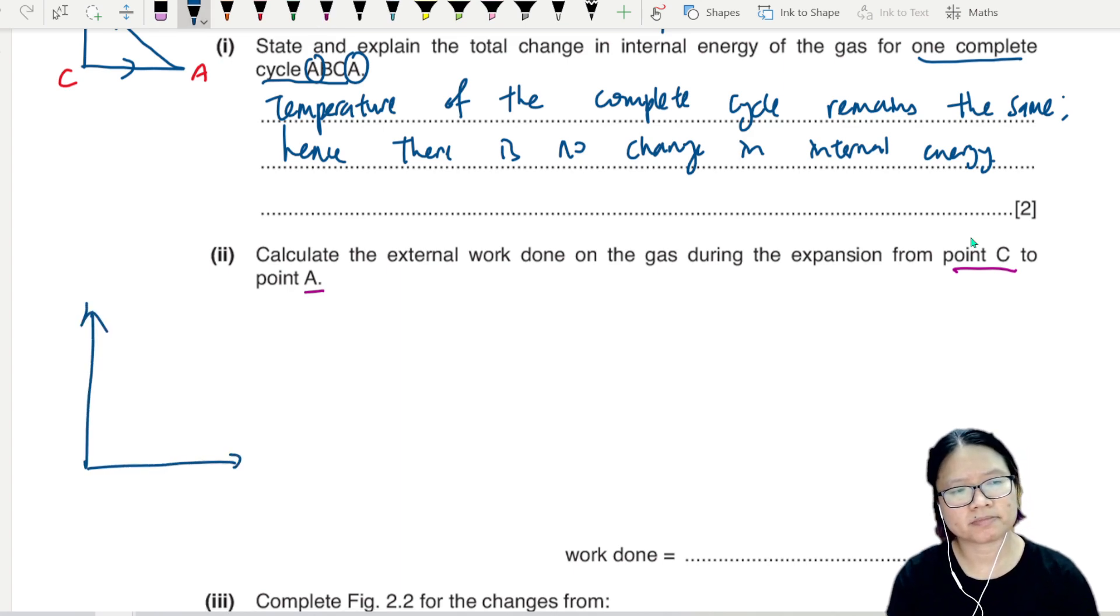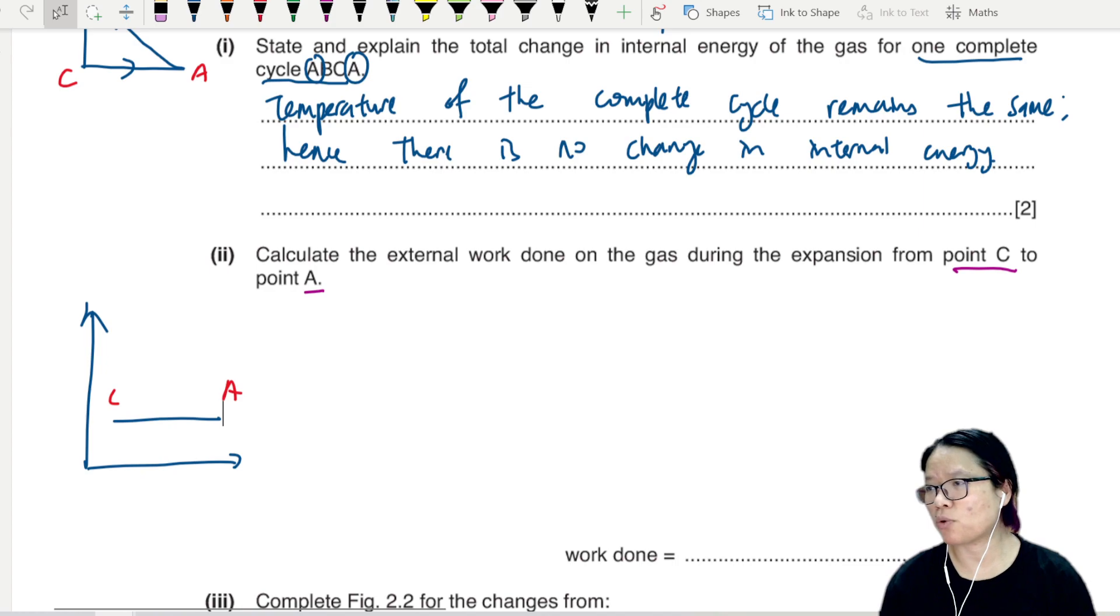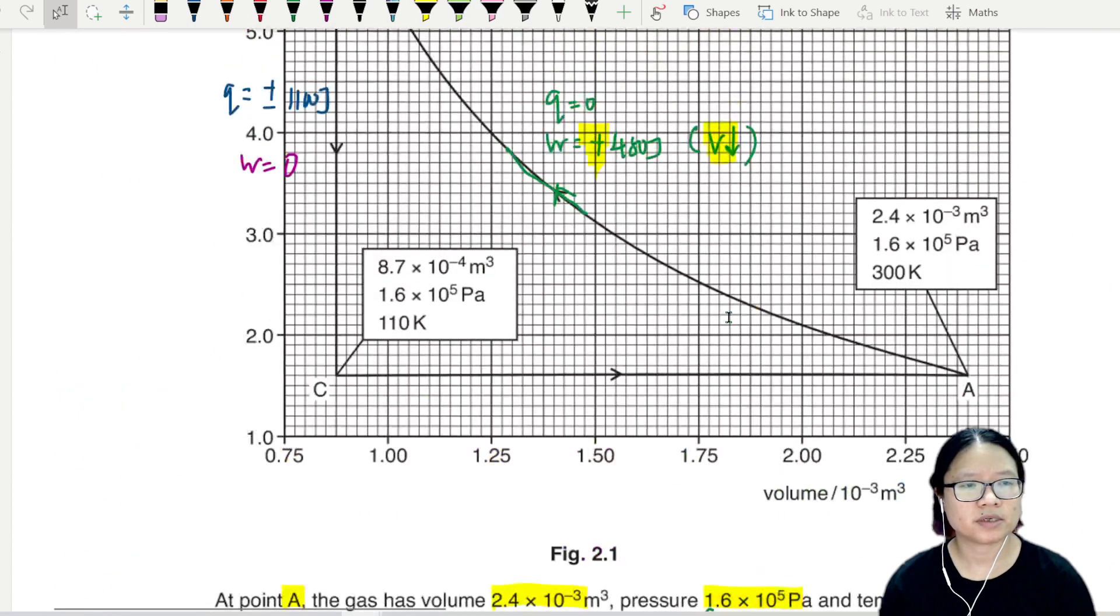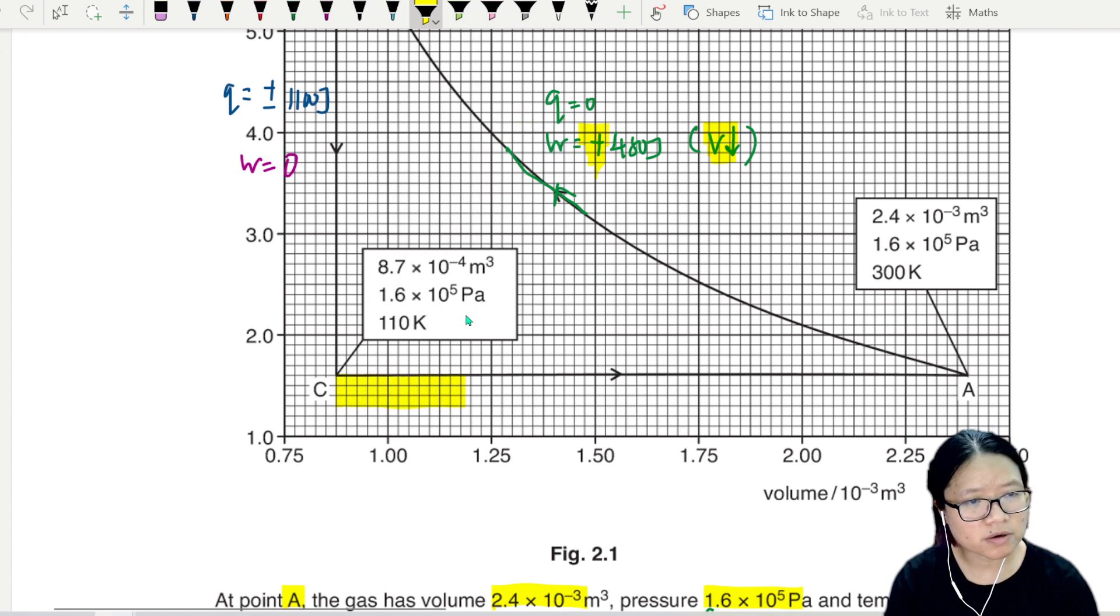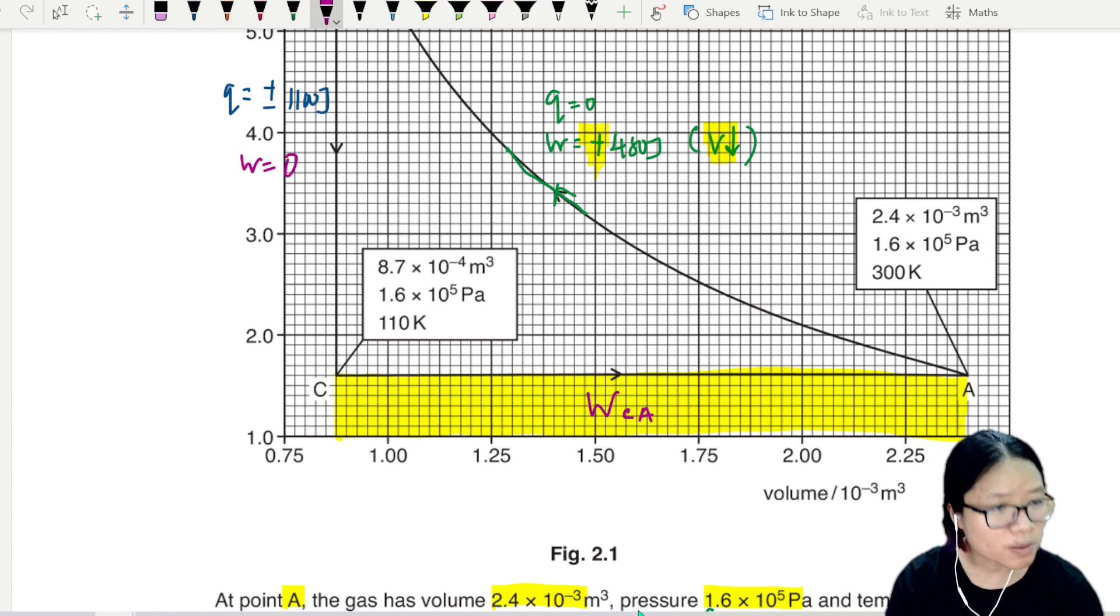If I look at my graph, I'm going to sketch here, but C to A is actually here to here. And then if I extrapolate the graph here to here, what I'm looking for is actually this area, the whole area from here to A, p delta V. The pressure is constant, so this is work done from C to A.